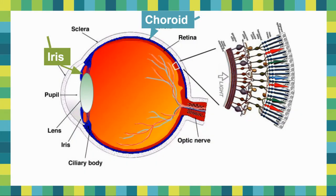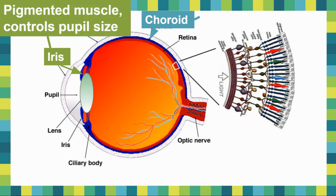Now let's talk about the choroid and the iris, which are the middle layers of the eye. The iris is the part of your eye that you can see — it's the pigmented muscle that controls pupil size. If you put that your iris is just the colored part of your eye on a quiz or test, I'm going to mark it wrong. We're in grade 12 now, not grade 8.